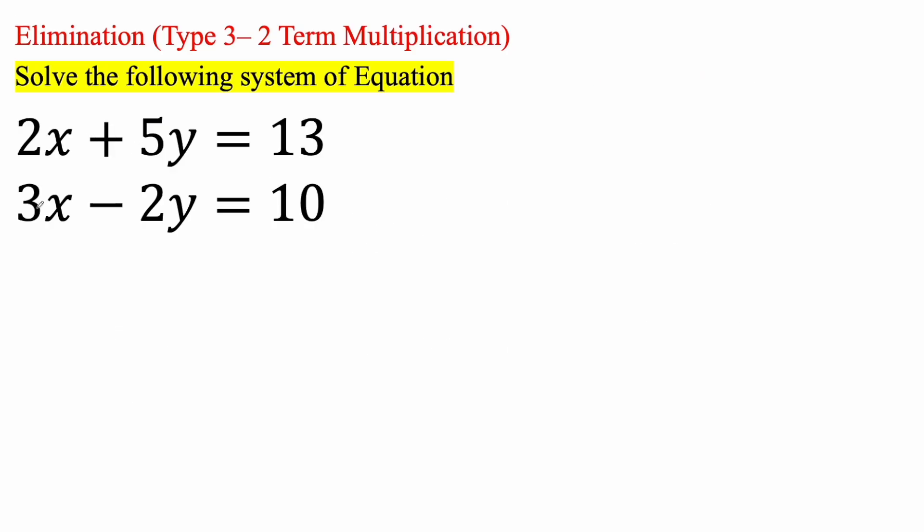So, if you see, this is 2x, this is 3x, this is 5y, this is negative 2y. We can't double, we can't triple anything to easily eliminate one term. And so, what we need to do is actually manipulate both equations.